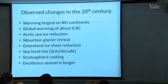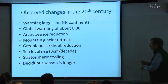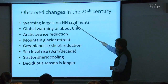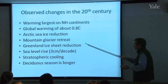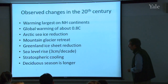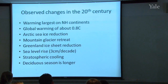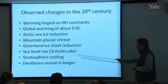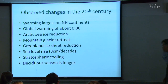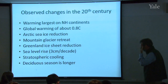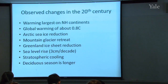Summarizing the observed changes over the 20th century: warming largest in northern hemisphere continents, global warming of about 0.8 degrees Celsius. Arctic sea ice reduction — though Antarctic sea ice hasn't changed. Most mountain glaciers are in retreat. The Greenland ice sheet has been losing mass. Sea level rise of about 3 cm per decade. Stratospheric cooling. And the deciduous growing season is longer. All these changes have been noted over the 20th century, especially over the last 25 to 30 years.